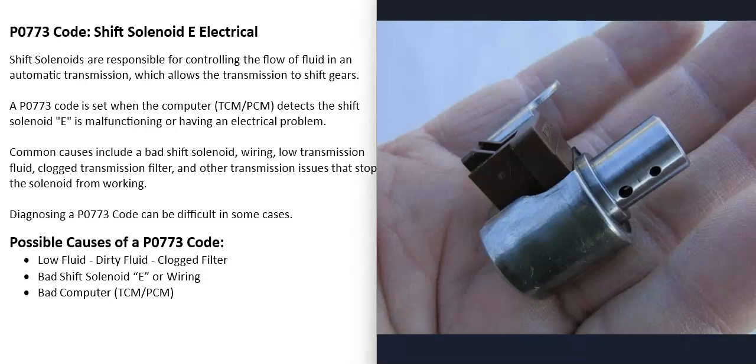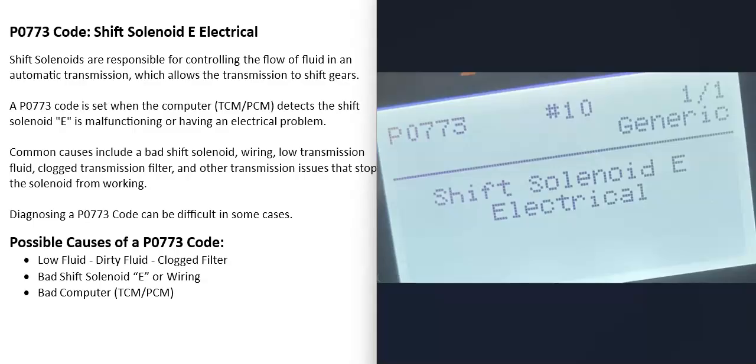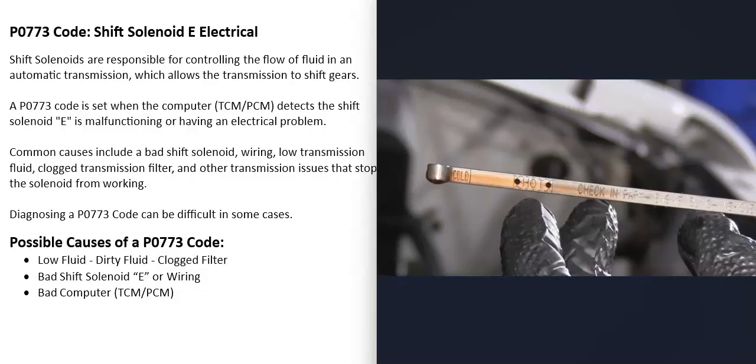What would be some possible causes of a P0773 code? The first thing to do whenever you have any kind of transmission problem is, if possible, check the transmission fluid and be sure it's not low or really dirty. Many vehicles nowadays don't have a dipstick, but if you can, it's a good idea to check it. This code is pointing more towards an electrical issue, but if possible, it's always a good idea to check the transmission fluid.